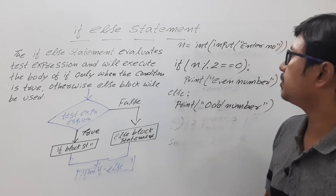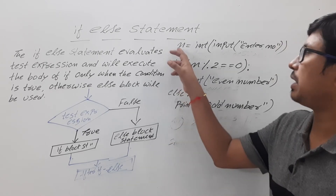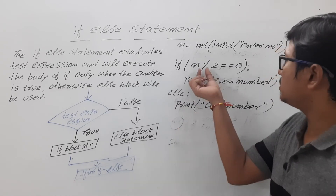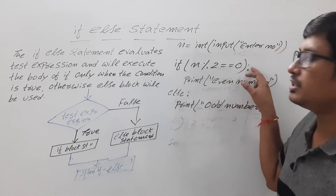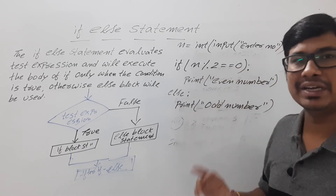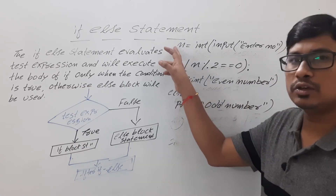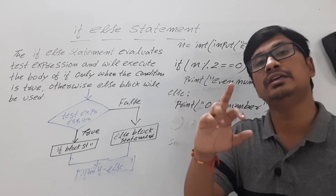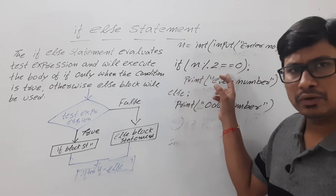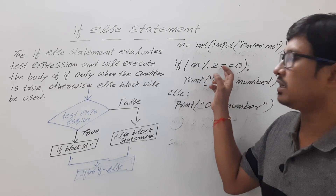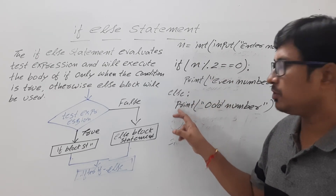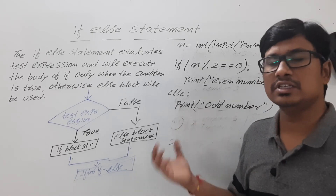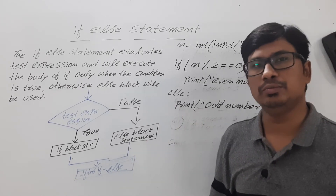If the user has entered 10, then 10 modulus 2 equals 0, and 0 == 0 is true, so it will print even number. Suppose the user enters 13: 13 modulus 2 gives a remainder of 1, and 1 == 0 is false. As the condition is false, the statement in the else block will be executed, which is odd number. Now let me demonstrate these things practically in Jupyter Notebook.